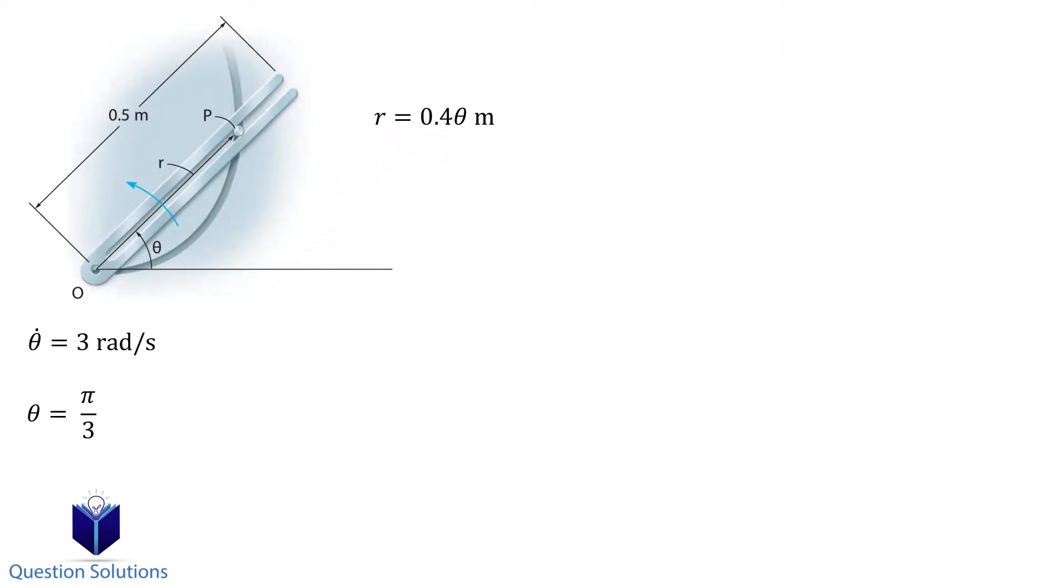The first step is to take the first and second time derivatives of our position equation. Remember to use the chain rule from calculus. If you don't know how to do this, there is a link in the description.